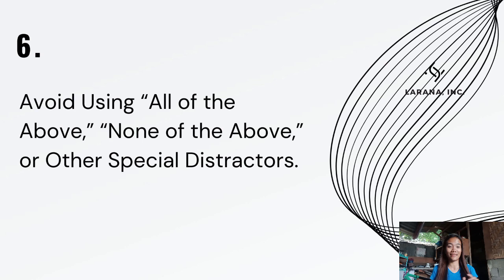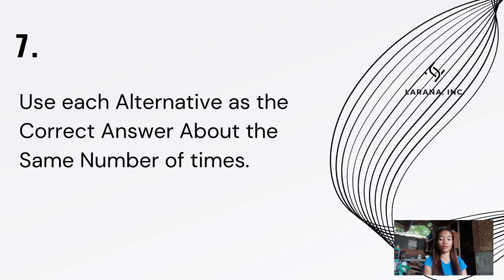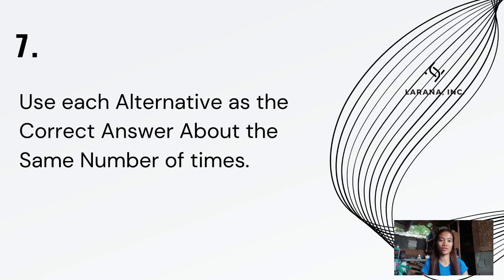Next, use each alternative as the correct answer about the same number of times. When creating correct answers, about 25% of items should use each letter option so that answer patterns are avoided. Many students can detect patterns in correct answers. There is even a common saying that if you don't know the answer, just put 'C' — and sometimes it works. It is important that correct answers are well-distributed across options A, B, C, and D.